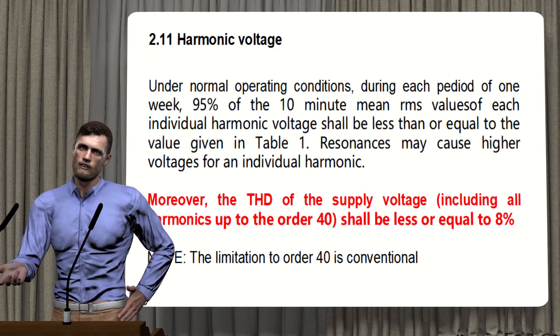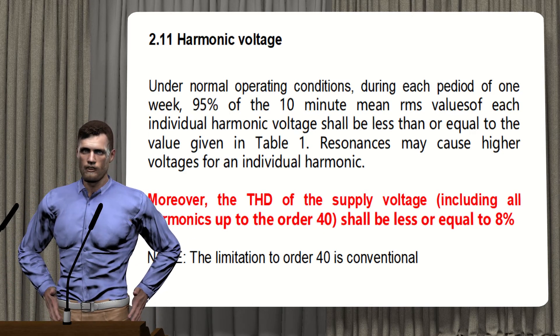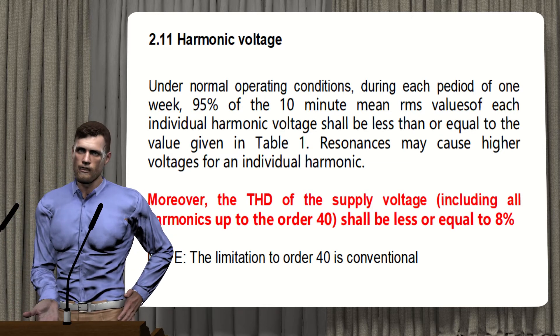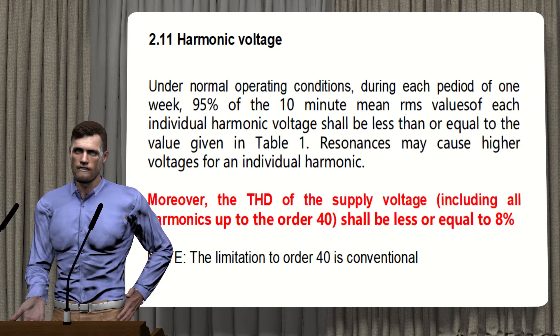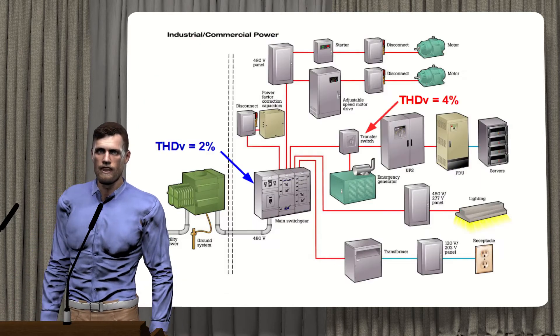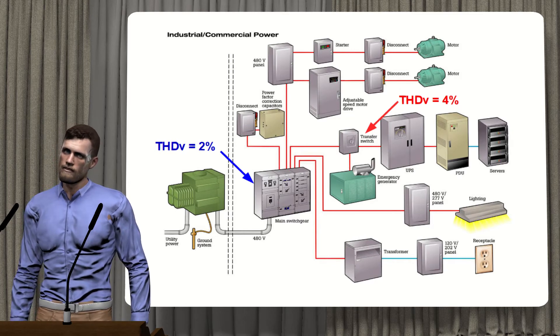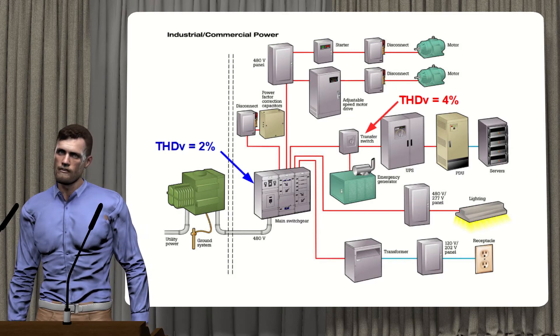If we measure the THD in another point of the installation different from that of the common coupling point, its value may change, since the further we are from the common coupling point, the greater the distortion due to the voltage drops in the distribution cables caused by the current harmonics generated by the loads.